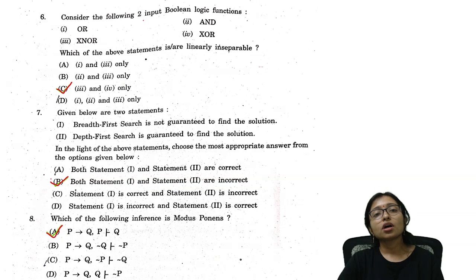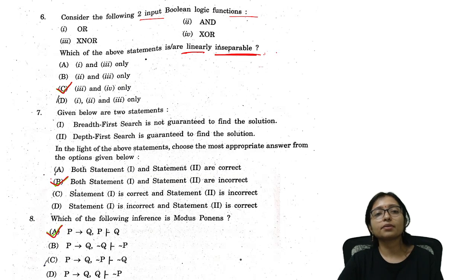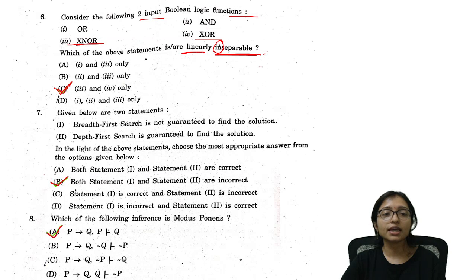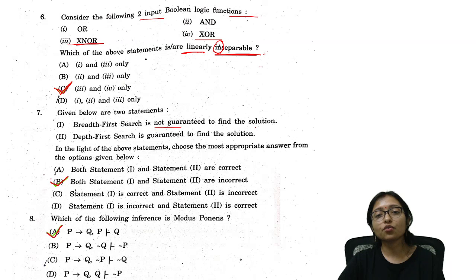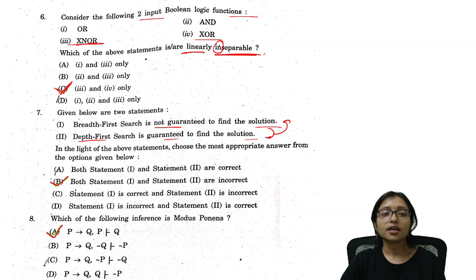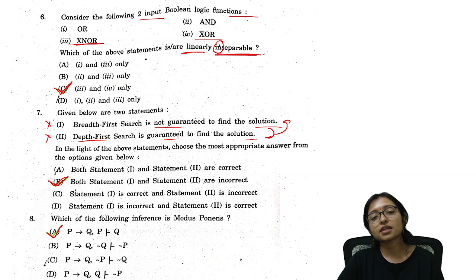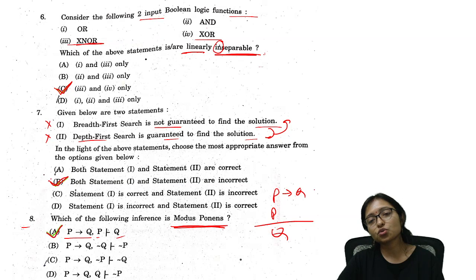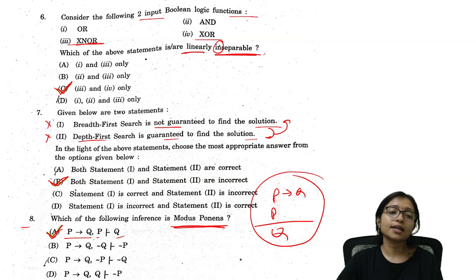Question 3: Which boolean functions are not linearly separable? XOR and XNOR are not linearly separable, while AND and OR are linearly separable. Since the question asks for inseparable ones, options 3 and 4 — XOR and XNOR — are correct. Question 6: Breadth-first search is guaranteed to find a solution; depth-first search is not guaranteed — but the statements given are the opposite, so both are wrong. Option B is correct. Question 8: Modus ponens rule states when P implies Q is true and P is true, then Q is also true. Option A is the correct answer.